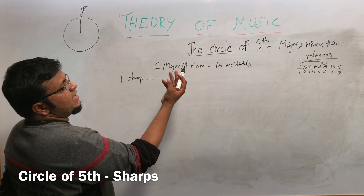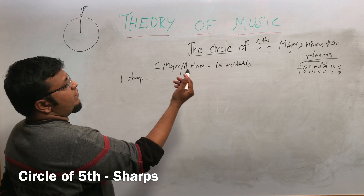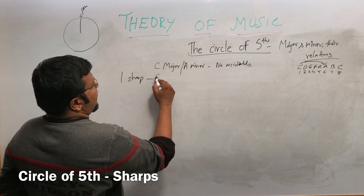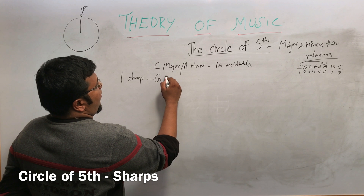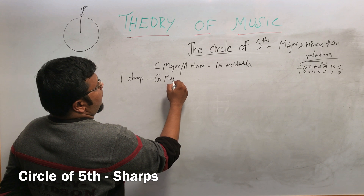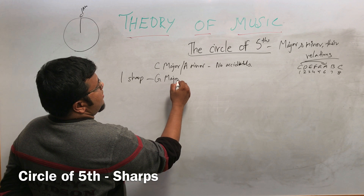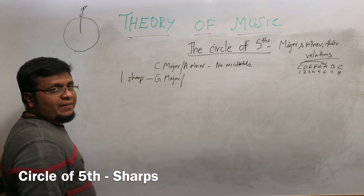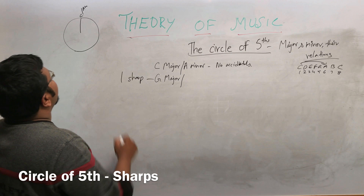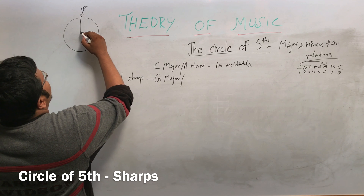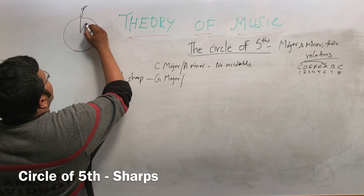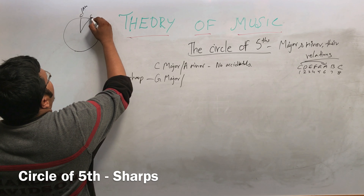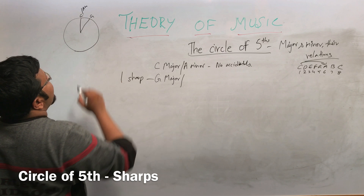From C, counting: C, D, E, F, G — that fifth note is called G major. G major has a one-sharp scale.